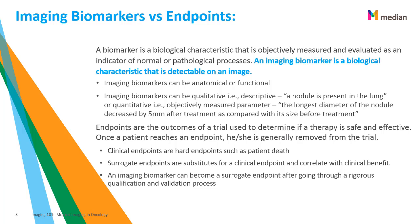Imaging biomarkers can be anatomical or functional. They can be qualitative — descriptive only. For example, is there a nodule in the lung? The answer would contain no specific measure, just a yes or no. Another example: is there diffused disease present in the organ? Again, the response would be a yes or a no, with no measured information.